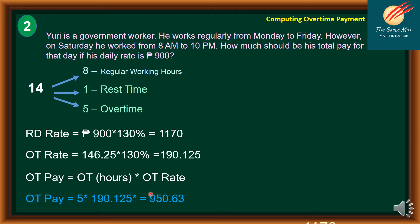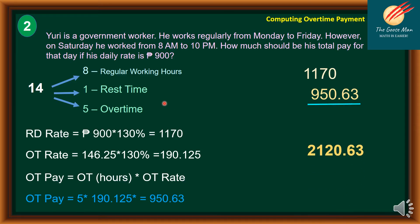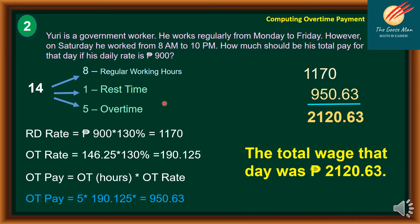To summarize the payment: the first 8 hours come to 1,170 pesos, and the overtime of the overtime is 950.63 pesos. The total is 2,120.63 pesos. Therefore, the total wage that day was 2,120.63 pesos.